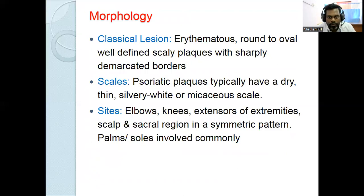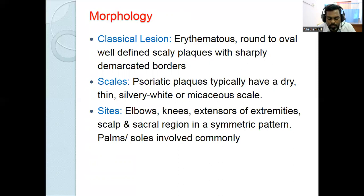The morphology of psoriasis: the classical lesion is an erythematous, round to oval, well-defined scaly plaque with sharply demarcated borders. Scales are dry, thin, and silvery white. Most common sites are elbows, knees, extensors of extremities, scalp, and sacral region in a symmetrical pattern. Palms and soles are also commonly involved.